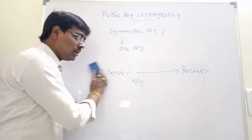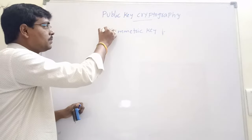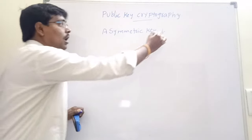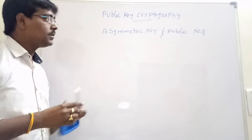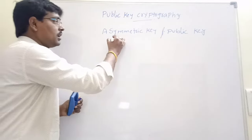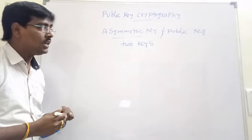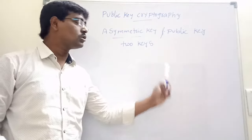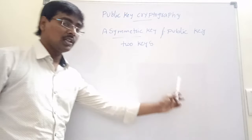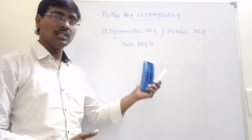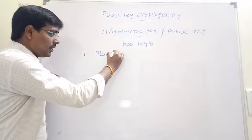To overcome this problem we are moving to another technique — asymmetric key cryptography, also called public key cryptography. In symmetric key cryptography the main problem is only one key is used for both encryption and decryption. In asymmetric key cryptography we use two keys: one key is used for encryption and another key is used for decryption. The sender performs the encryption operation using one key and the receiver performs decryption using a different key.